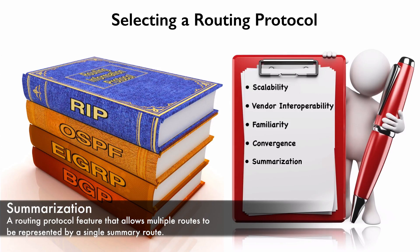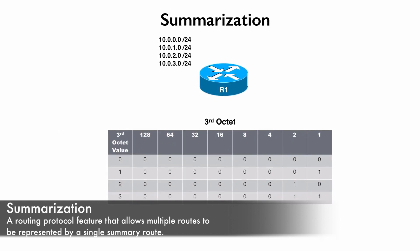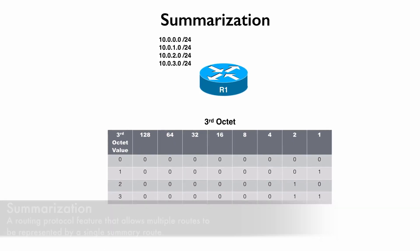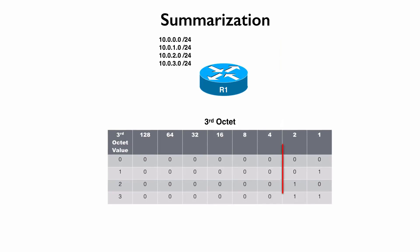Consider an example of summarization. Router R1's routing table knows about four different networks: 10.0.0.0/24, 10.0.1.0/24, 10.0.2.0/24, and 10.0.3.0/24. Examining these networks, notice that the first two octets — the 10.0 octets — are identical. Looking at the third octet, we have six bits in common when counting left to right. With six bits in common, we could represent all four of these networks as one summary address.